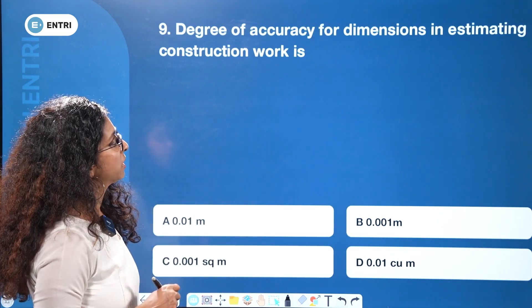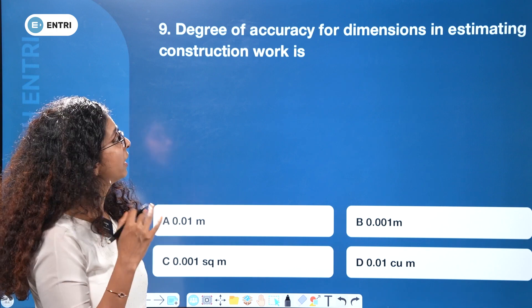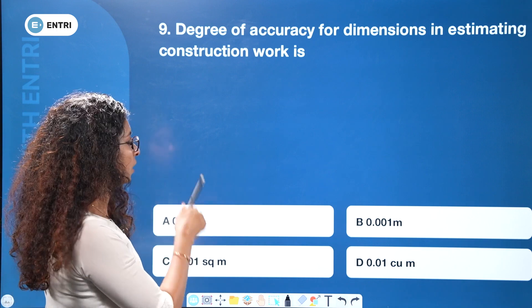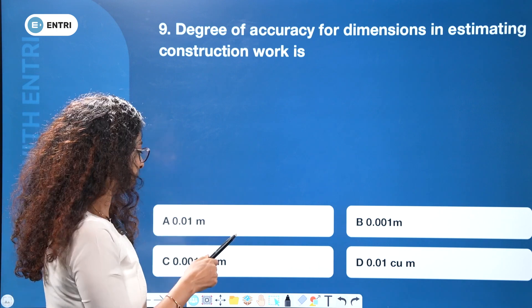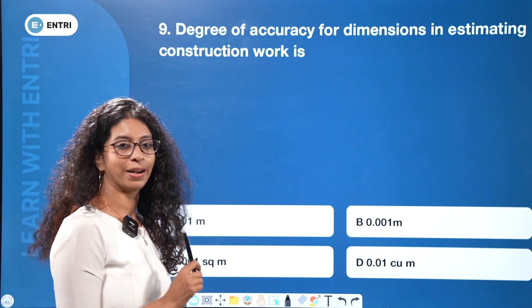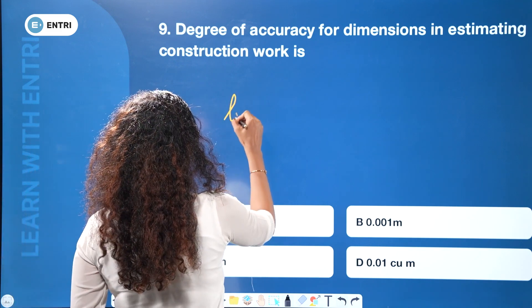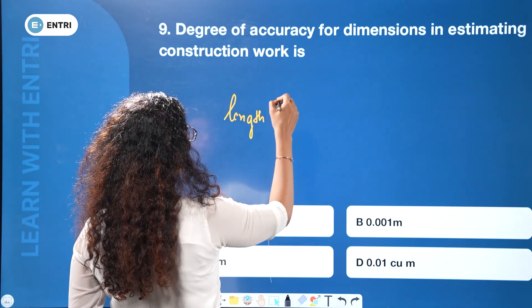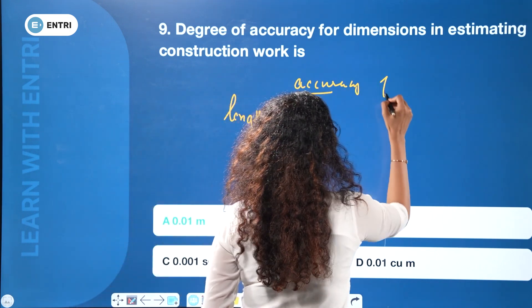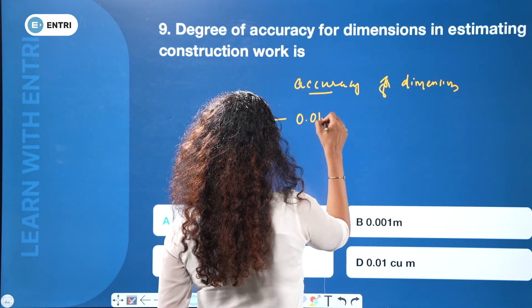Degree of accuracy for dimensions in estimating construction work — the answer is 0.01 meter. We look at the length, width dimensions. The accuracy for dimensions in construction estimation is taken to 0.01 meter.